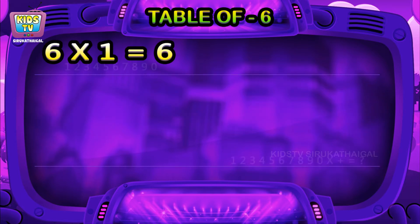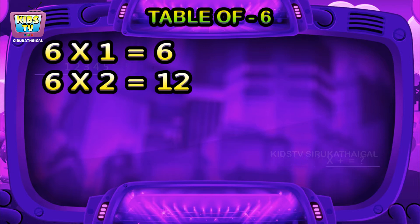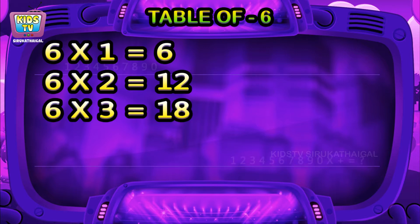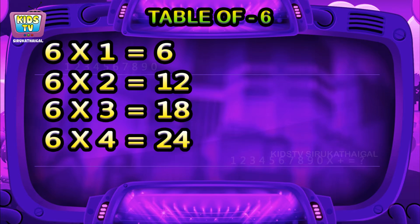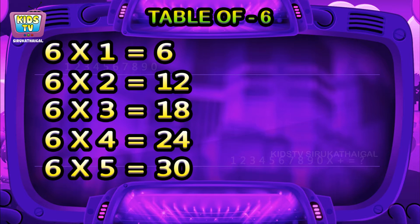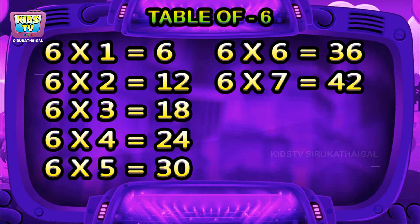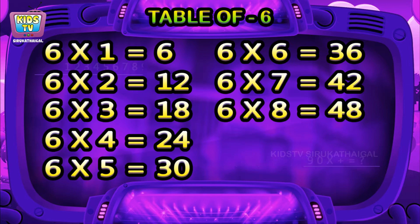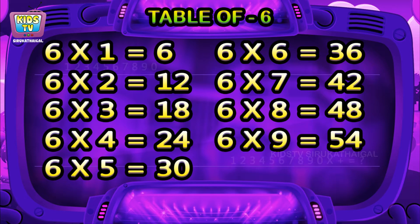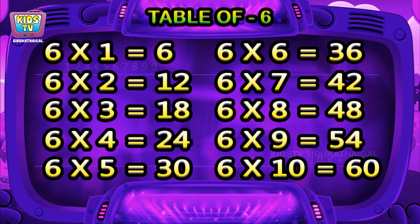Six ones are six, six twos are twelve, six threes are eighteen, six fours are twenty-four, six fives are thirty, six sixes are thirty-six, six sevens are forty-two, six eights are forty-eight, six nines are fifty-four, six tens are sixty.